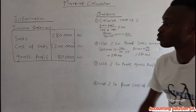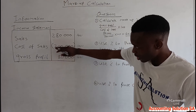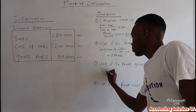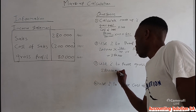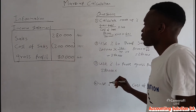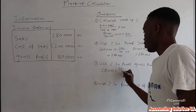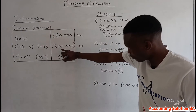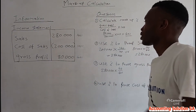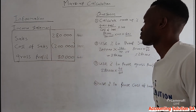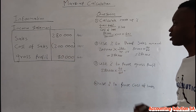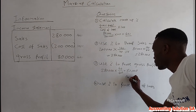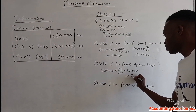Number three: use the percentage to prove gross profit. We assume we don't have the gross profit figure — we only have either sales or cost of sales. If you are using sales of 280,000, you say 280,000 multiplied by 40 over 140. If using cost of sales instead, you say 200,000 multiplied by 40 over 100, and in both cases you are going to get 80,000.